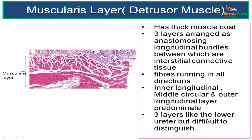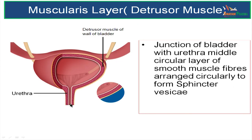The three layers, like those of the lower ureter, are difficult to distinguish. At the junction of the bladder with the urethra, the middle circular layer of smooth muscle fibers becomes arranged circularly to form the sphincter vesicae at the internal urethral orifice.